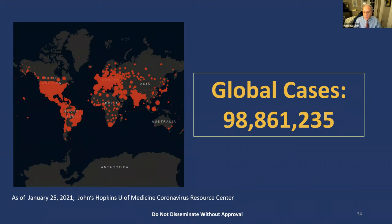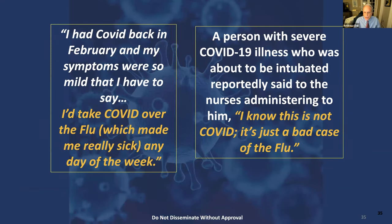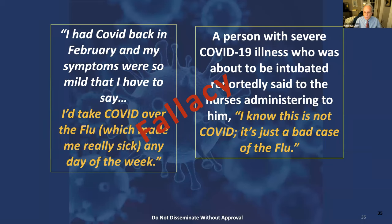We now have almost 100 million global cases of COVID-19, with very few places on the globe that have not had a case. Here are two anecdotes about the problem. Someone said, 'I had COVID back in February and my symptoms were so mild that I take COVID over the flu any day of the week.' Contrast that with a person with severe COVID-19 illness who was about to be intubated reportedly saying to nurses, 'I know this isn't COVID — it's just a bad case of the flu.' This is a fallacy. Anyone who doesn't think COVID-19 is serious is seriously misunderstanding what's going on.